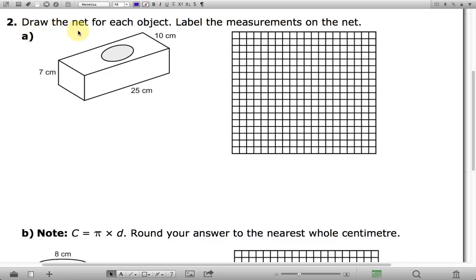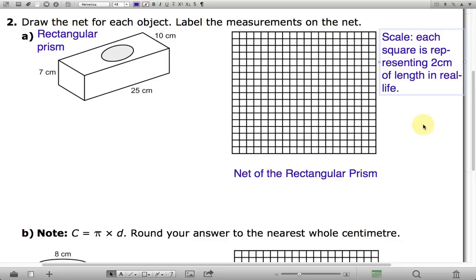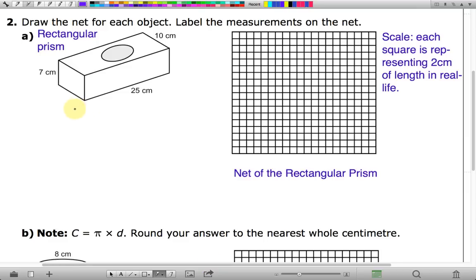First thing we'd like to do is draw the net for each object and label the measurements on the net. So the first object that we have here is called a rectangular prism, and over here we are going to do a net of the rectangular prism. Typically with three-dimensional drawings we would take this as the front of the object.